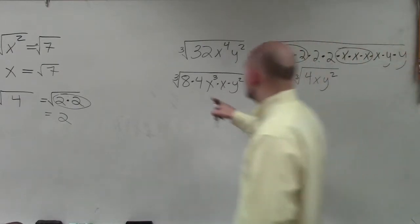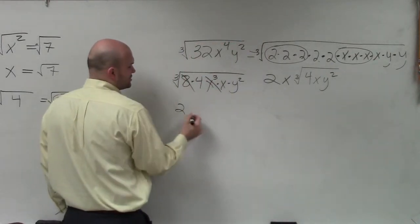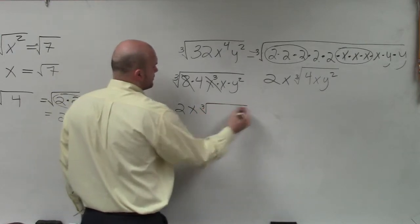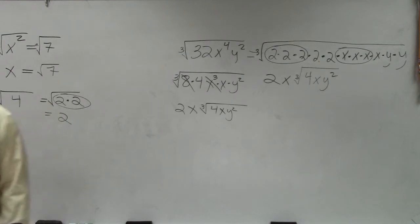So as I mentioned, the cube root of 8 is 2. The cube root of x cubed is just going to be x. And then I'm left with 4xy squared. So you can use both methods depending on if you understand either one or not.